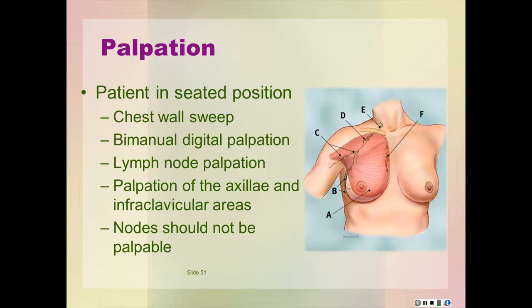In the picture on this slide, A indicates the pectoralis major muscle, B the axillary lymph nodes level 1, C the axillary lymph nodes level 2, D is axillary node level 3, E is supraclavicular lymph nodes, and F are the internal mammary lymph nodes.